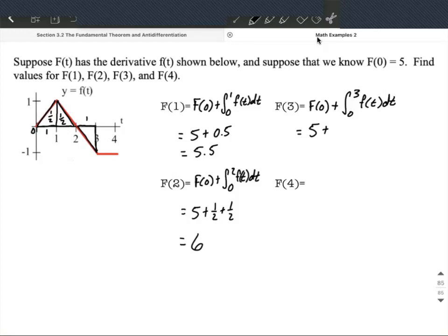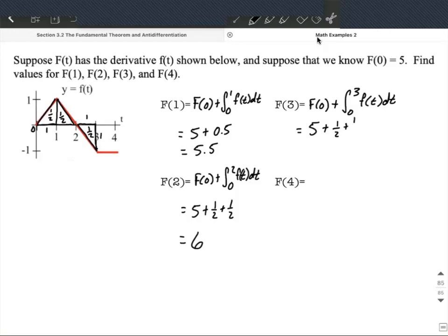This time, base is 1, height is 1, so area is 1/2. But be careful: it's 1/2 + 1/2 - 1/2, and we make it negative because the area is below the x-axis. So 5 + 1/2 + 1/2 - 1/2 = 5.5.